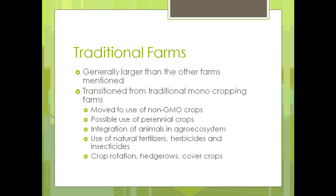Traditional farms are generally the largest ones. What we're trying to get those farmers to do is understand they need to transition away from the monocropping discussed in Unit 1 — one or maybe two crops — and possibly move toward non-GMO crops. The biggest problem, as mentioned in Unit 1, is that non-GMO crops don't produce anywhere near the same yield as GMO crops. Until that changes, money-wise, farmers probably aren't going to switch. We have to find a way to get better production using new methods.